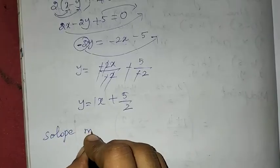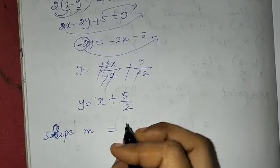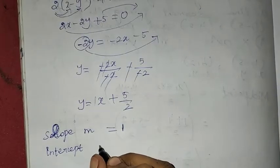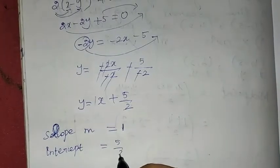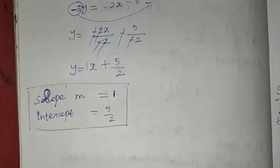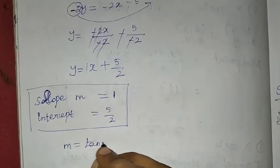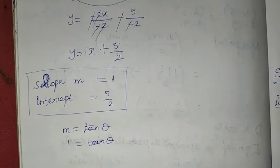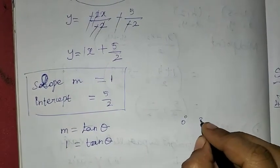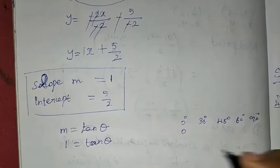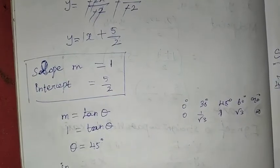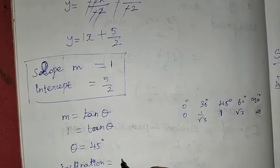So the slope m = 1. The intercept c = 5/2. For inclination, using m = tan θ: 1 = tan θ. From the trigonometry table — 0°, 30°, 45°, 60°, 90° — tan 45° = 1, so θ = 45°. The inclination is 45 degrees.